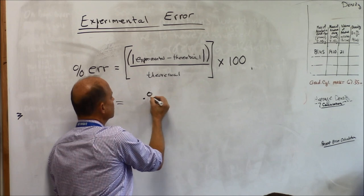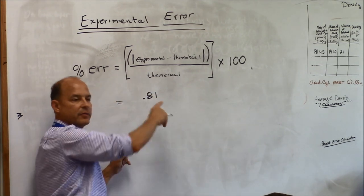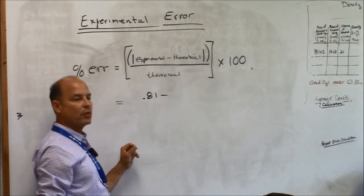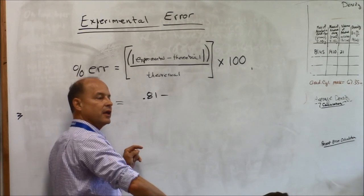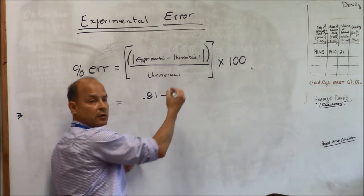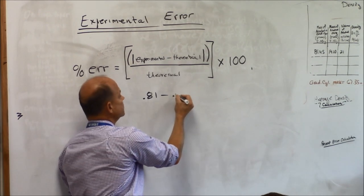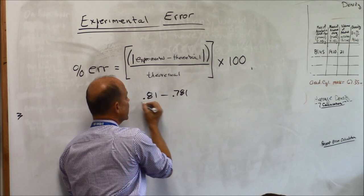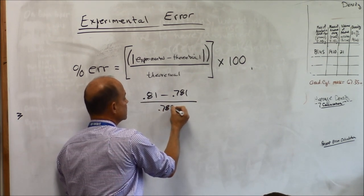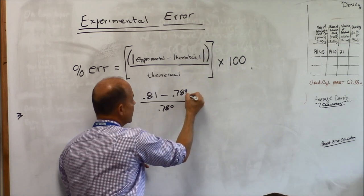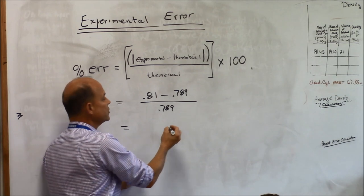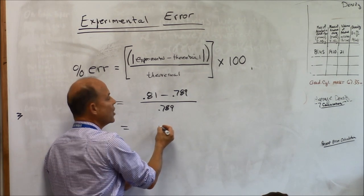Point eight one, and that's great, that's limited sig figs, you've done everything I've told you to so far. And I've erased it, but what did Siri tell us the accepted value for the density of alcohol is? Point seven eight nine. Okay, and then we're going to divide it by point seven eight nine, point seven eight nine, point seven eight nine.